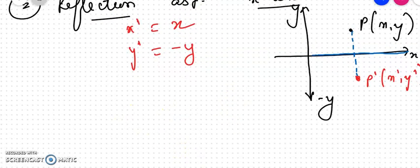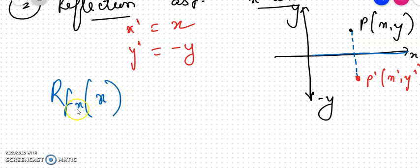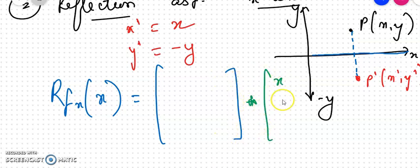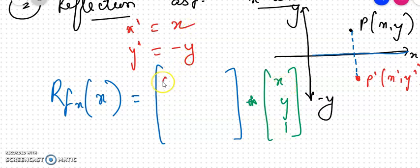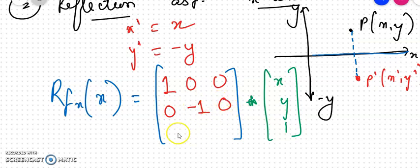We draw the matrix for reflection about X-axis, denoted RFX. Multiplied by point matrix [X, Y, 1]: the first row gives X' = X, so 1, 0, 0. The second row gives Y' = −Y, so Y must be multiplied by −1: 0, −1, 0. The last row is 0, 0, 1. This is reflection about X-axis.